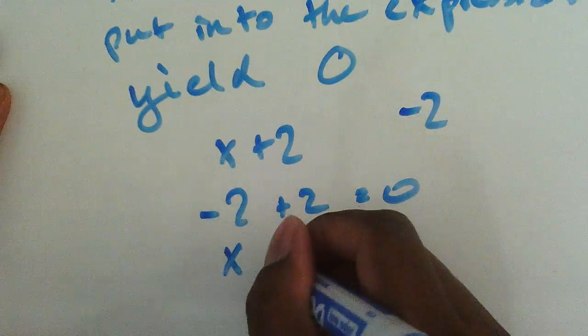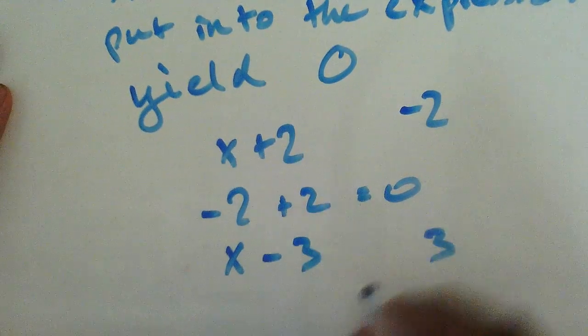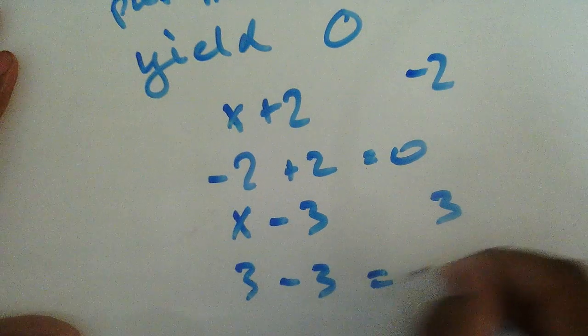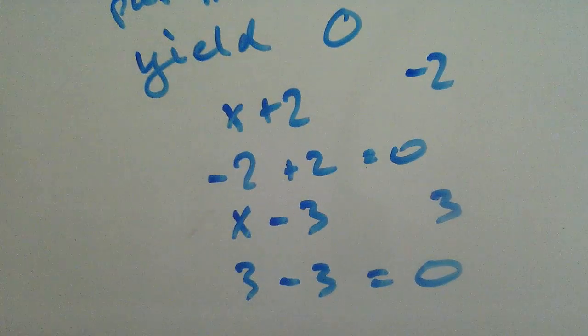If I have x minus three, the root of x minus three is three because three minus three equals zero. Basically the idea.